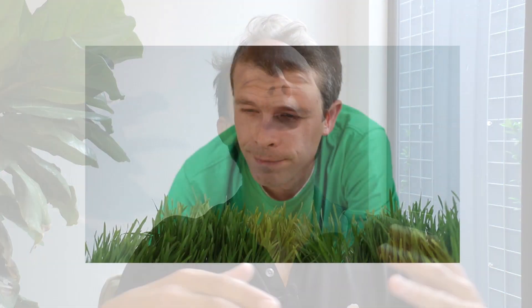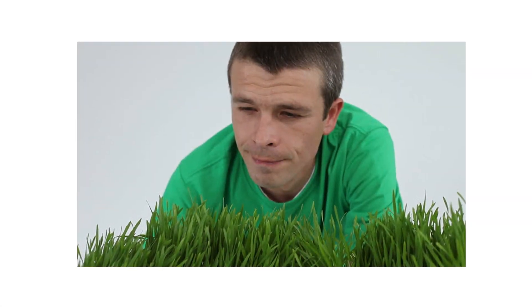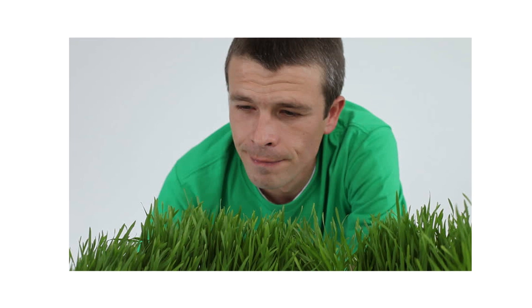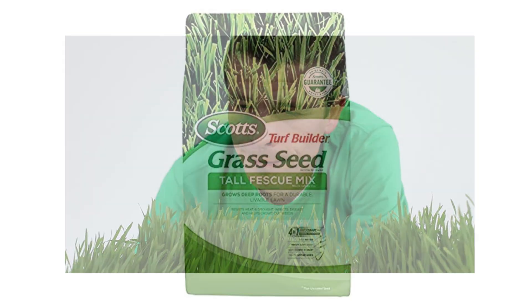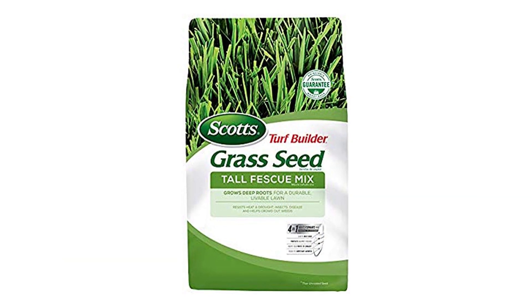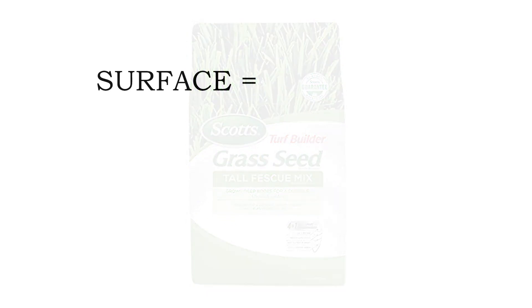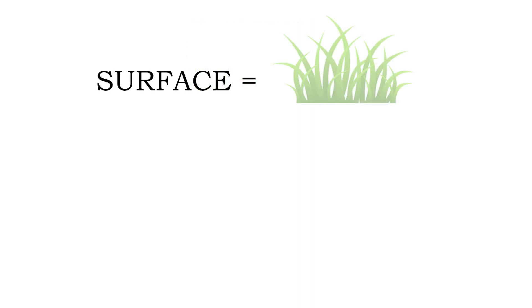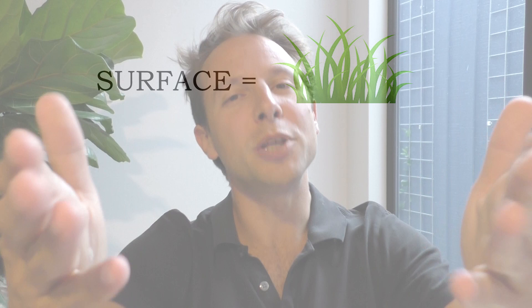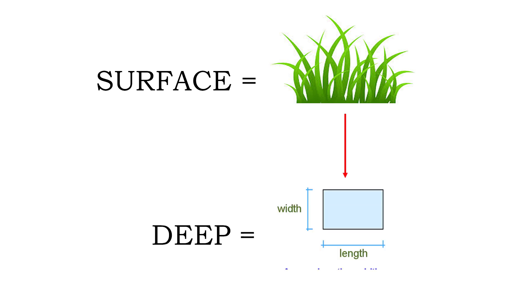As a simple example: you have a lawn that is 10 by 10, and you want to plant new seed on your lawn. How many bags of seed do you need to cover your entire lawn? On the surface, this looks like a question about lawns — it's talking about grass and seeds. But the lawn is just a wrapping. The deep structure is actually area. We're looking at a math problem.